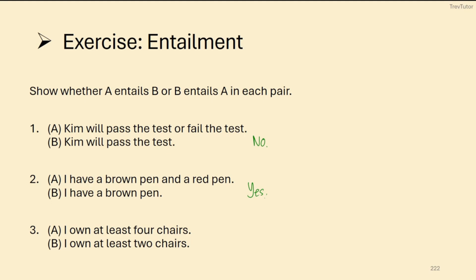I own at least four chairs. Does that mean that I own at least two chairs? And the answer is yes, because if you own at least four, then four is bigger than two. So you own at least two as well.